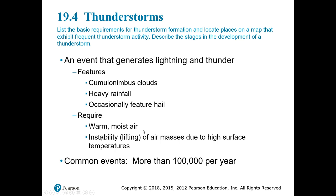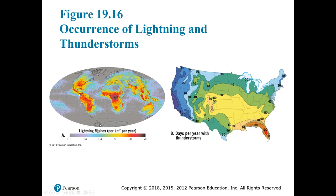Thunderstorms are very common. If we look at lightning flashes as a proxy for where thunderstorms are happening, we notice that most are equatorial, around low latitudes. Looking at the center of the United States and comparing it to other places at a similar latitude, we have a lot of thunderstorms — that's because we have warm, wet air from the Gulf of Mexico meeting up with dry Canadian air, creating the perfect setup for this type of weather.